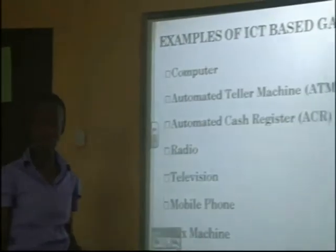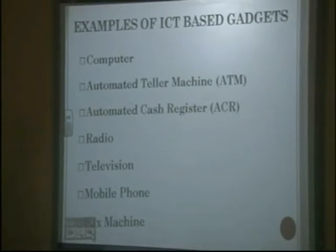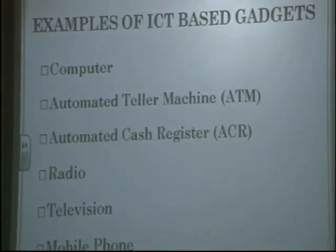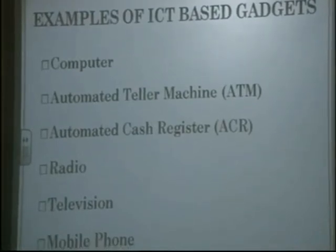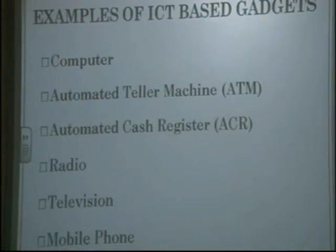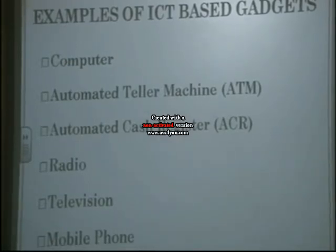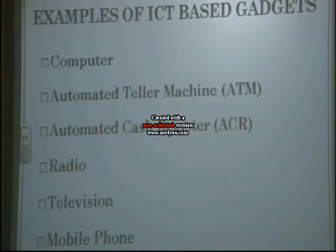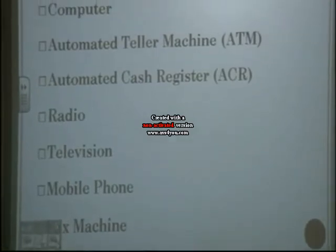I have on the board some examples of ICT-based gadgets. Number one, we have the computer — that is the number one gadget that is very important in the society. Everywhere you go — offices, schools, banks — you come across a computer. Secondly, the ATM, which is known as the Automated Teller Machine, mostly found in our banks today. The third one is the Automated Cash Register. We also have the radio, television, mobile phone, and fax machine. We are going to explain all these gadgets, how they work, their importance in the society, and where they can be found or used.